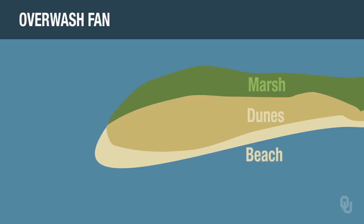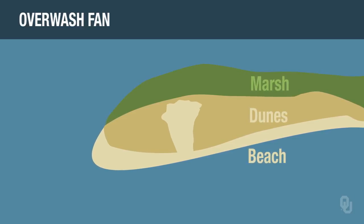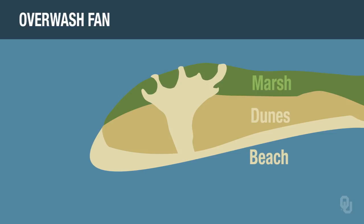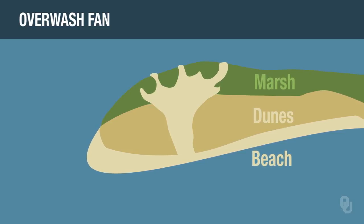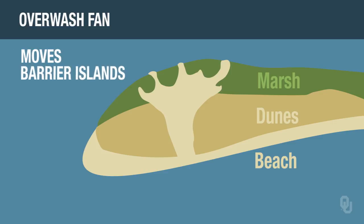The fourth process is overwash fans, and this occurs during large storms or hurricanes. Sand is moved from the beach to the back part of the barrier island. It usually shows up as a tongue of sand that goes from the beach back into the marsh area. It's a very important process because it moves barrier islands landward.